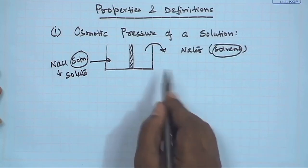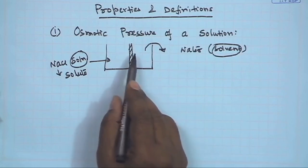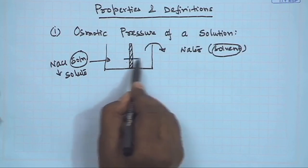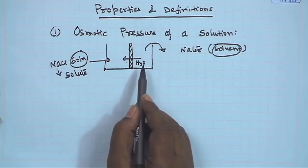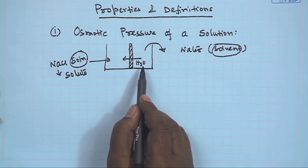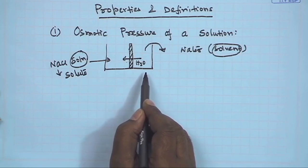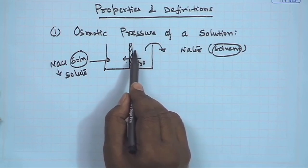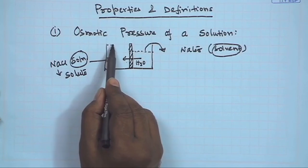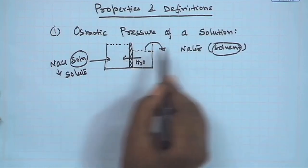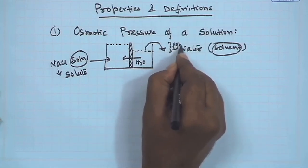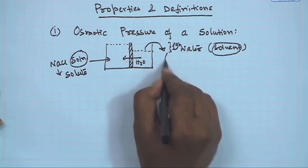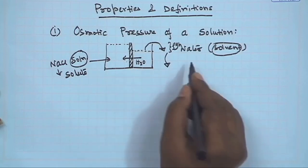As time progresses, the water concentration or activity of water is lower on the solution side. Since the membrane allows only water to permeate, water is transported from the solvent side to the solution side. This continues until equilibrium is reached, which typically takes around 24 to 36 hours. At equilibrium, the water level decreases on the solvent side and increases on the solution side, creating a hydrostatic pressure of ρgh, where h is the final height difference between the levels in both chambers.